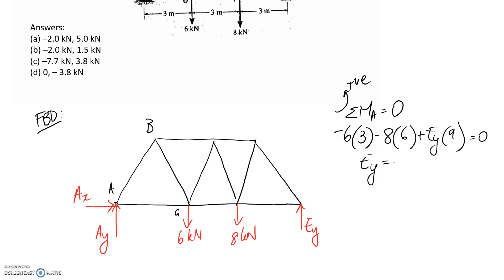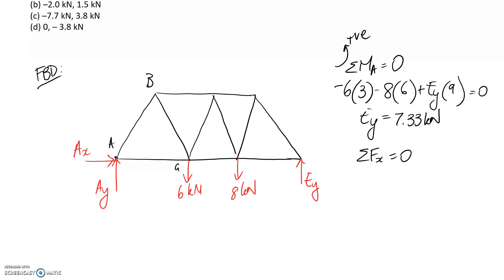If we go through and solve for Ey, it comes out to 7.33 kilonewtons. So now I can go back and get these other two. If I sum forces in the X direction, I'm going to get that Ax is equal to nothing, because there's nothing applied in the X direction.